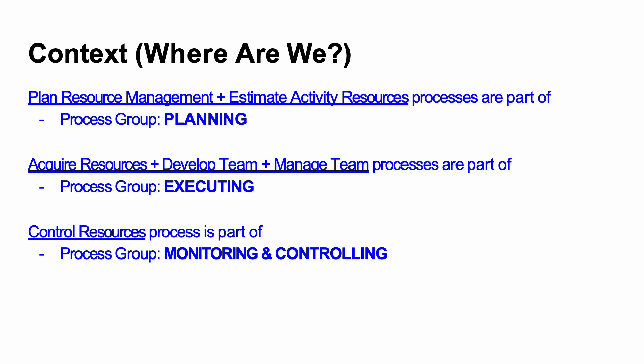When I look at this particular knowledge area, it's about resource management — all processes relate to resources, human or otherwise. Just as risk management has to do with risk, scope management with scope, and schedule management with time and schedule, resource management is specific to managing resources. The first two processes — plan resource management and estimate activity resources — are planning activities and fall within the planning process group.